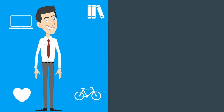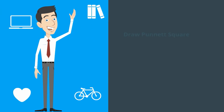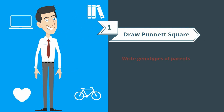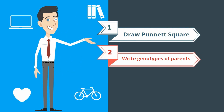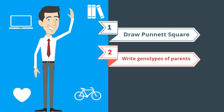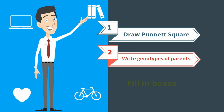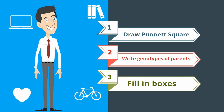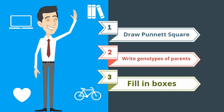Here are the steps for setting up a Punnett square: draw the Punnett square, write the genotypes of the parents on the side and on top, and then fill in the boxes. Let's work a couple of example problems.